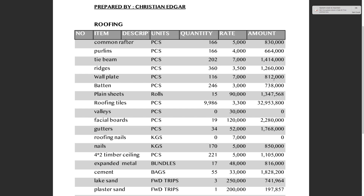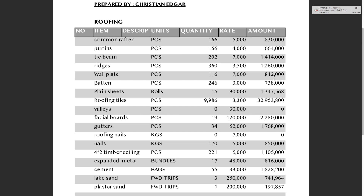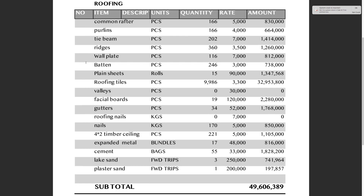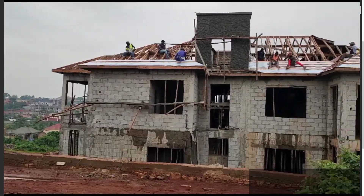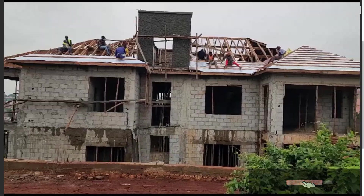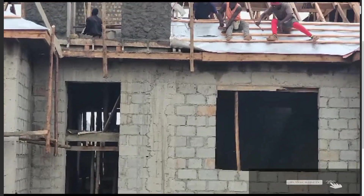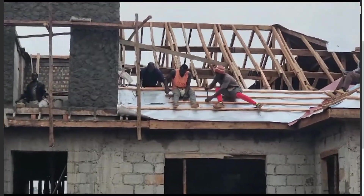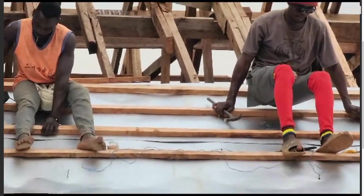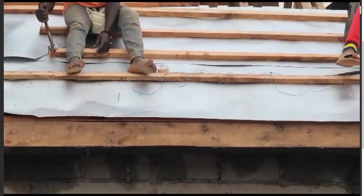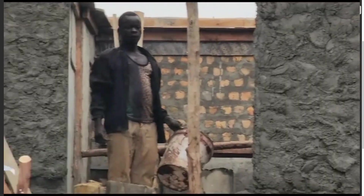We bought 116 pieces of wall plate at 7,000 shillings each, costing us 812,000 shillings. Battens — these receive the roofing tiles, sitting on top of the plane sheets. After the plane sheets the battens come next, then the roofing tiles on top. We bought 246 pieces at 3,000 shillings each, costing us 738,000 shillings.